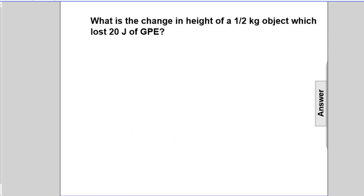Let's take inventory and keep track of what we know. The change in height will be the unknown. We have a one-half kilogram object which has lost 20 joules of GPE. So we can write: what is Δh of a mass of one-half kg that has lost 20 joules of GPE?